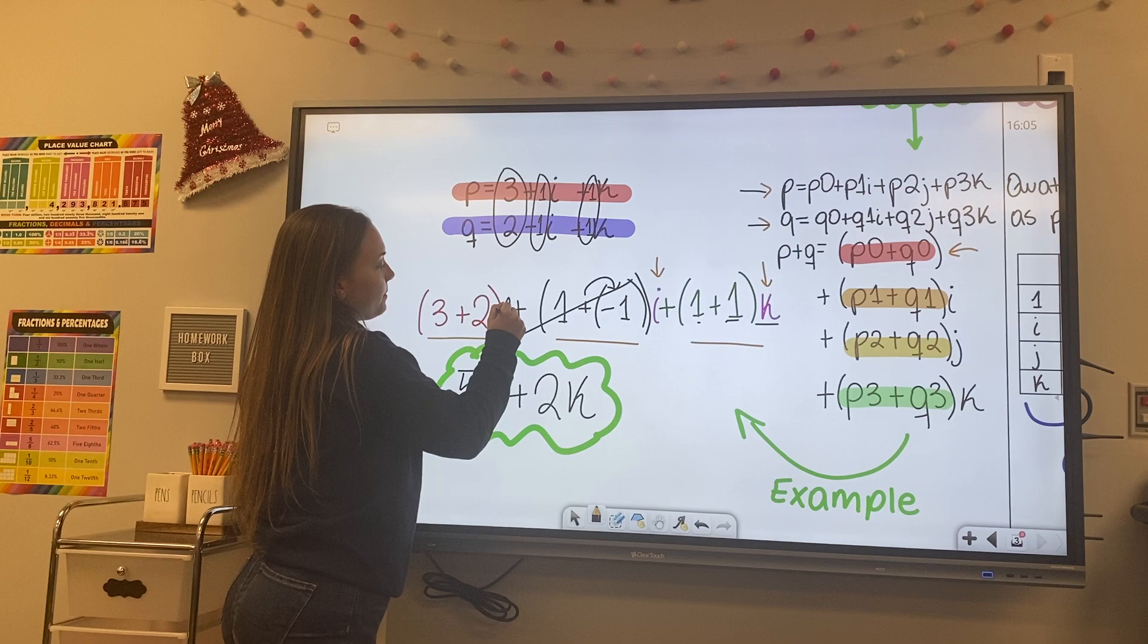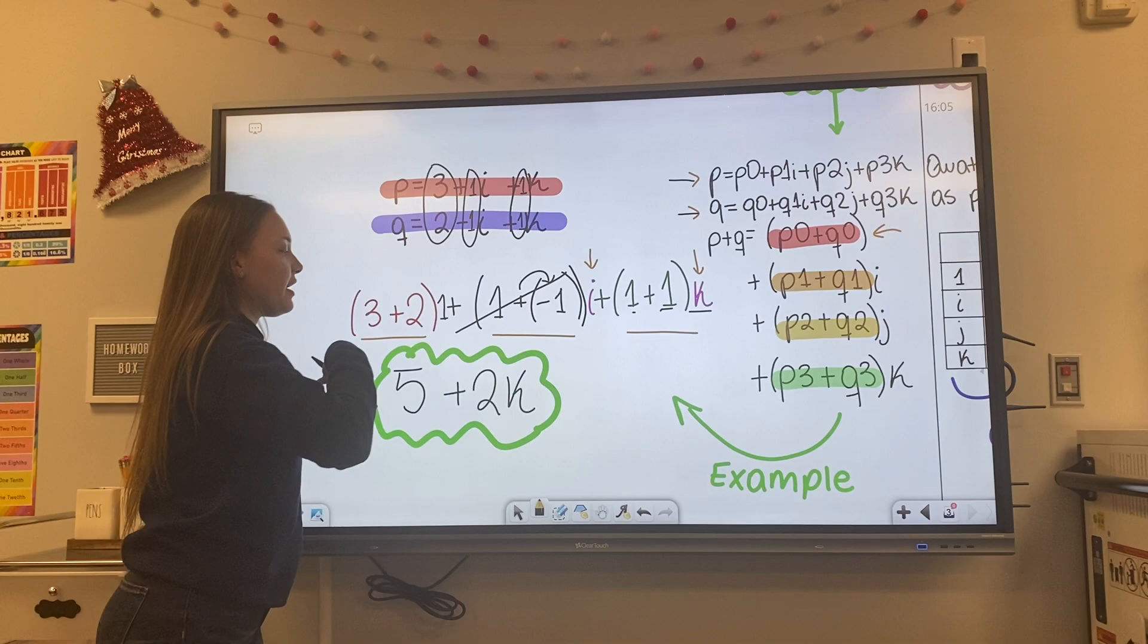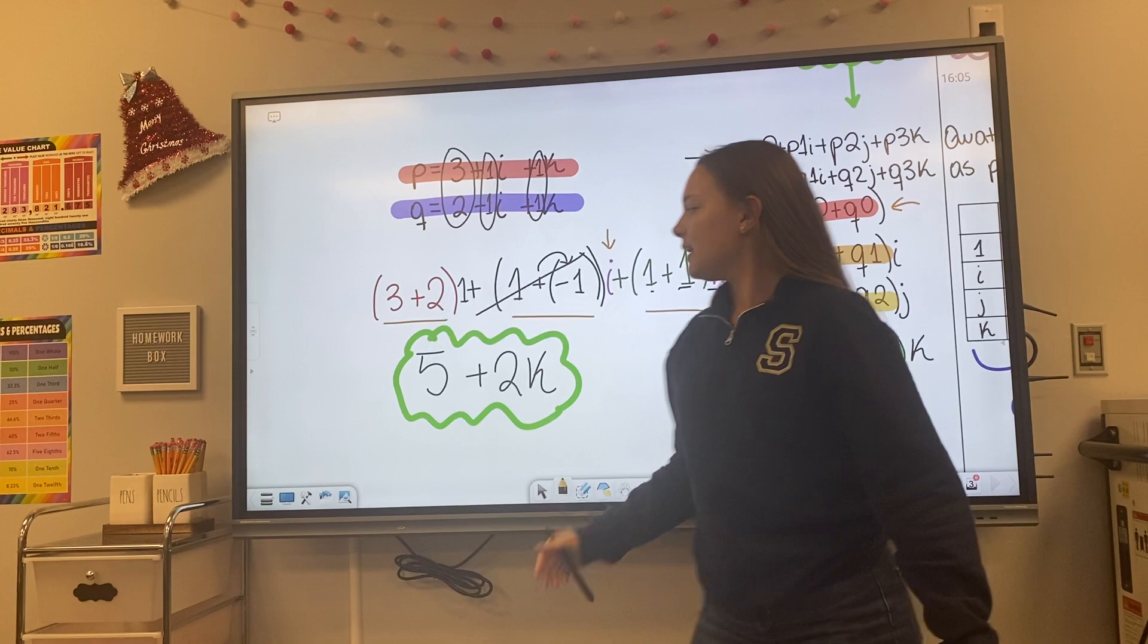So you can see here that once we added each component and we multiply them. This one is multiplied times 1, this one is multiplied times I, this one is multiplied times K. And since we have 1 plus negative 1 is 1 minus 1, we can scratch that out and we are ending up with 5 plus 2K. So pretty simple.